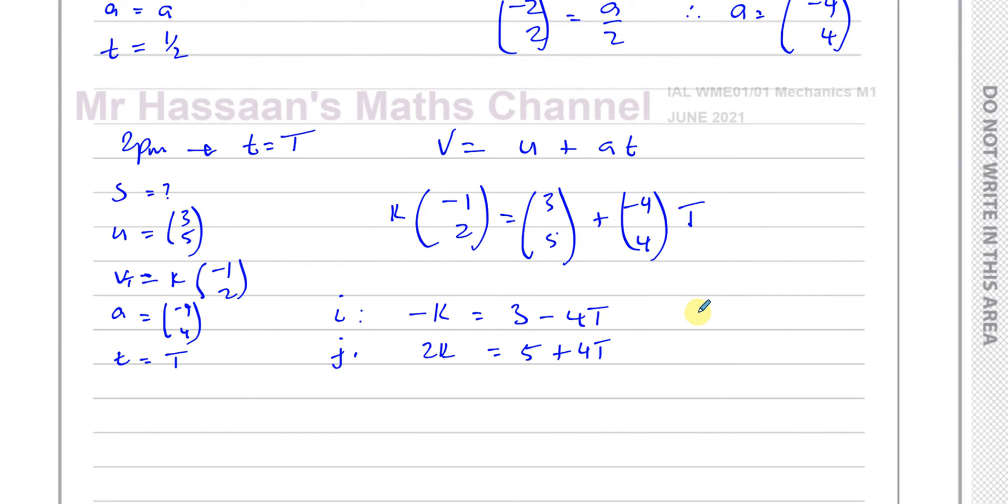I'm going to try to make the k's have the same coefficient so I can eliminate k using simultaneous equations. So I multiply this by 2. This gives minus 2k equals 6 minus 8T. Now I'm going to add these two equations to get rid of the k's. That will be 0 equals 11 minus 4T.